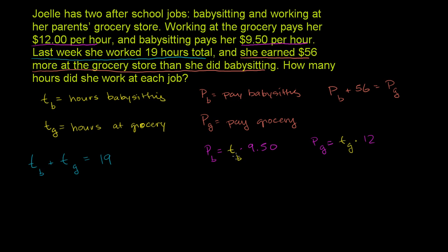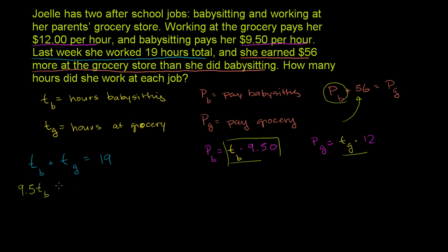Now we substitute those pay expressions back into the earnings equation. So: 9.5 times t_b plus 56 equals 12 times t_g. Now we need to solve for both variables — we have two equations and two unknowns, which is straightforward algebra.